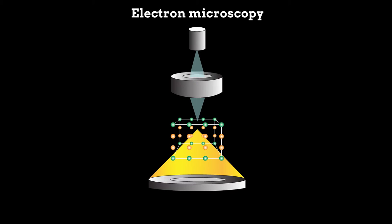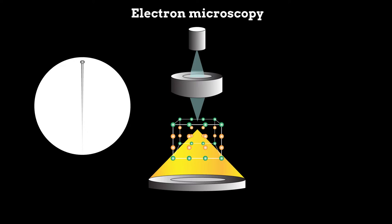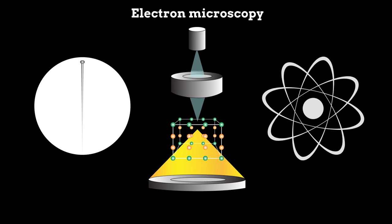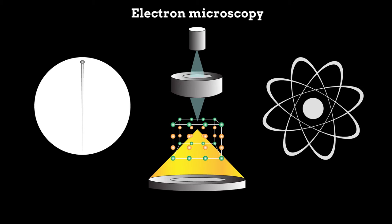Since then, scientists have used electron microscopy to successfully resolve distances millions of times smaller than a pinhead. But Feynman's vision of identifying the three-dimensional coordinates of individual atoms in a material remains elusive.